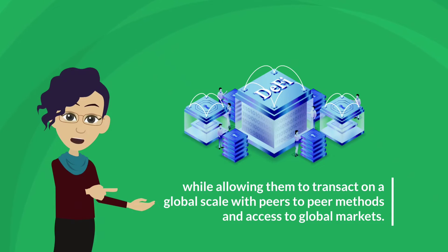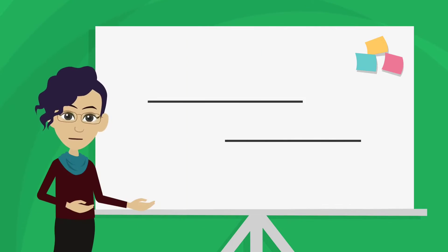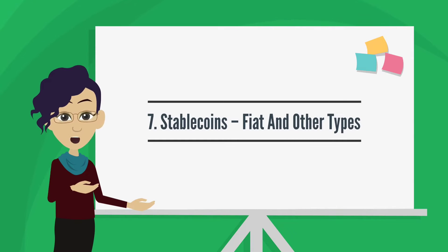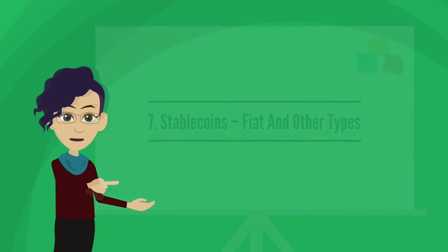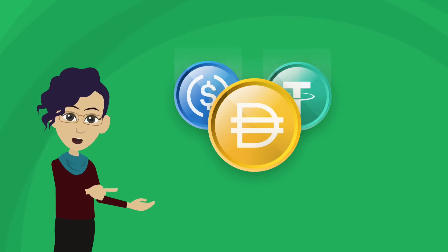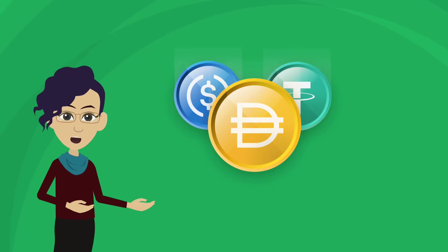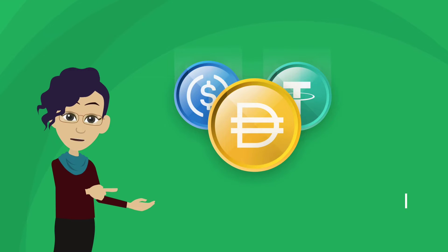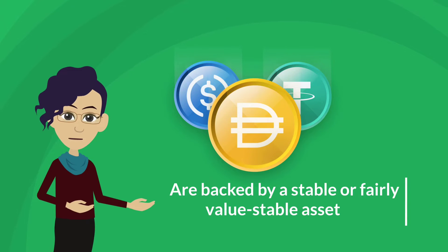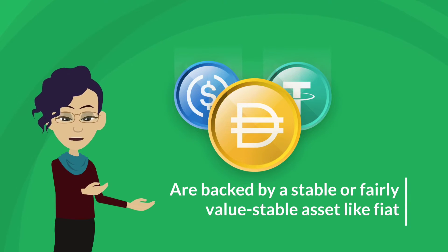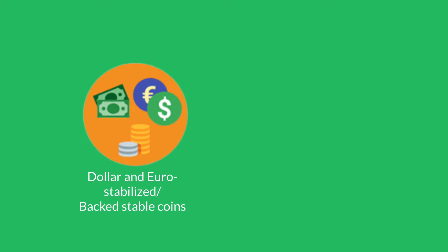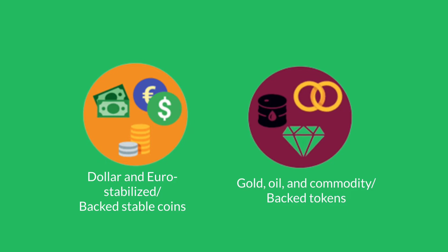Seven: stablecoins — fiat and other types. As the name suggests, these are tokens of a stable value, in that their value remains the same almost all the time. Stablecoins are backed by a stable or fairly value-stable asset like fiat — so we have dollar and euro-backed stablecoins — as well as gold and other precious metals, oil, and commodity-backed tokens.